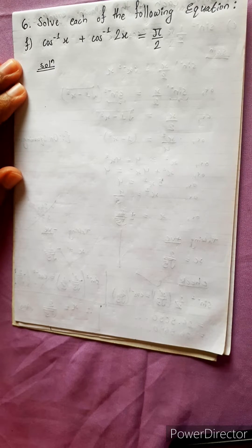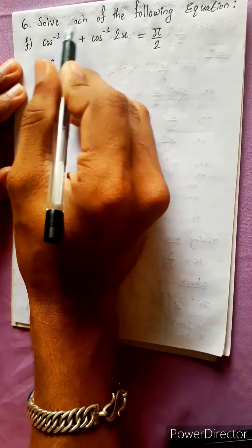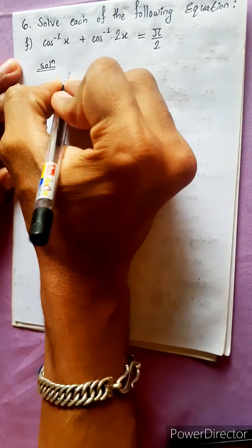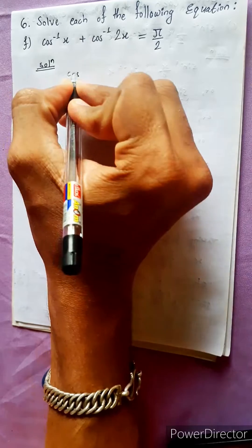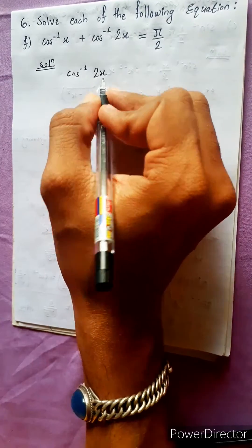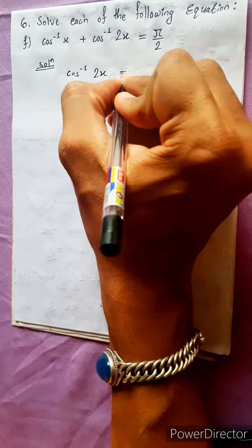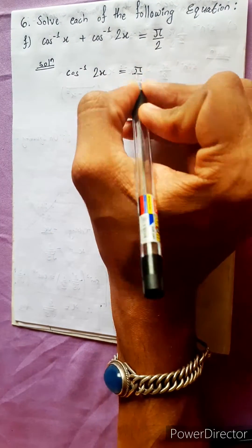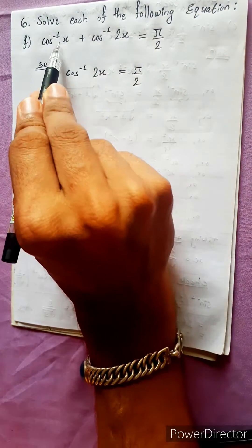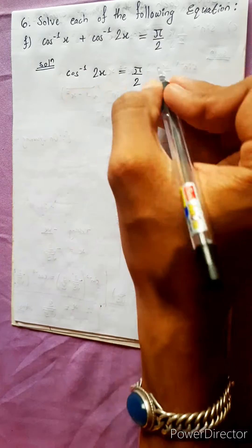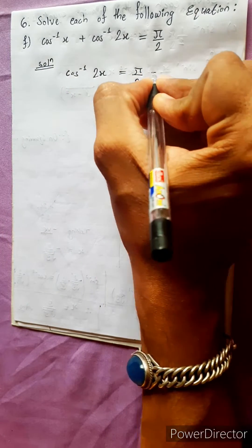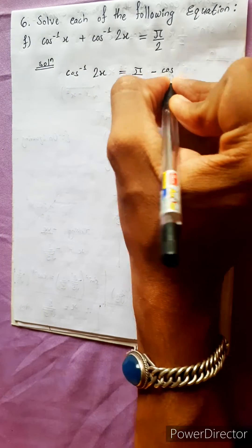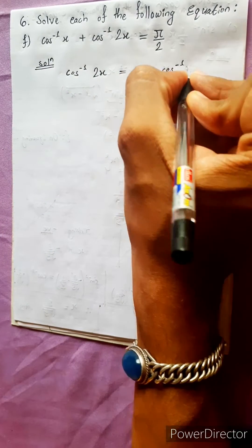Solve each of the following equations. The equation is: cos inverse 2x equals to pi by 2 minus cos inverse x.